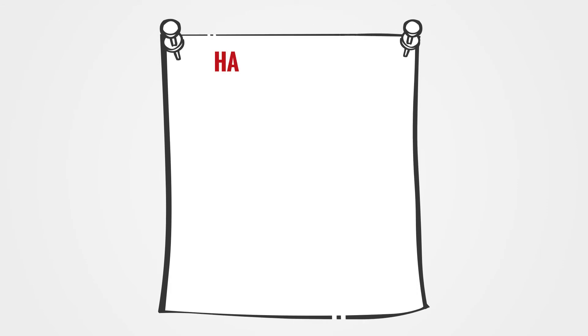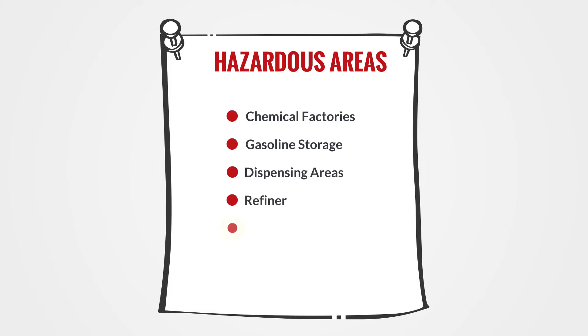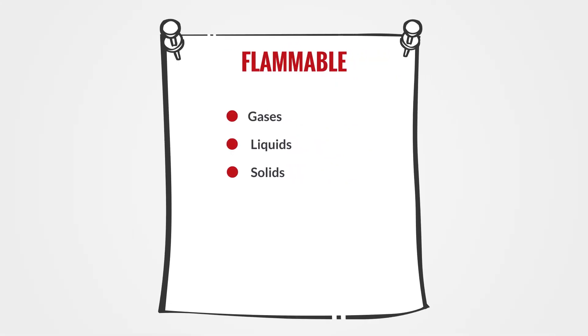Examples of hazardous areas are chemical factories, gasoline storage and dispensing areas, refineries, paint workshops, tank facilities, and loading areas for flammable gases, liquids, and solids.